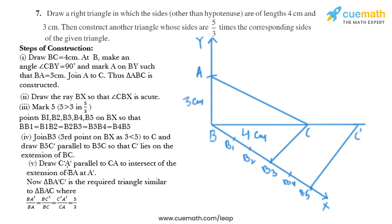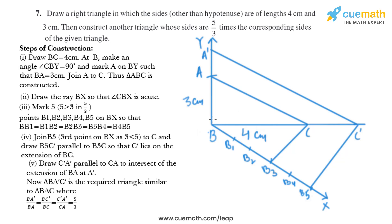Now in the next step, draw C'A' parallel to CA to intersect the extension of BA at A'. So we'll draw a line like that and we'll name the point of intersection as A'. So C'A' is parallel to CA. We have got the required triangle, that is BA'C', which is similar to BAC.